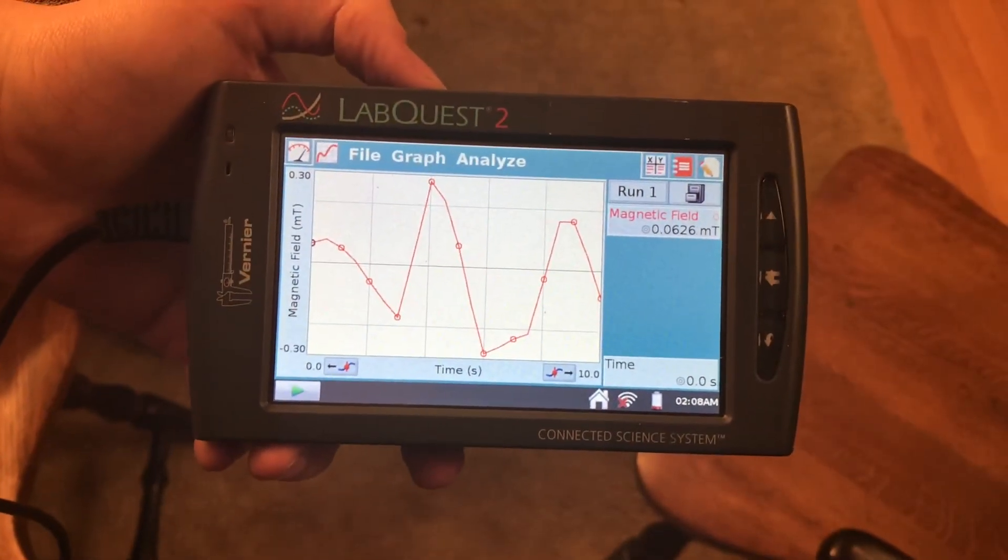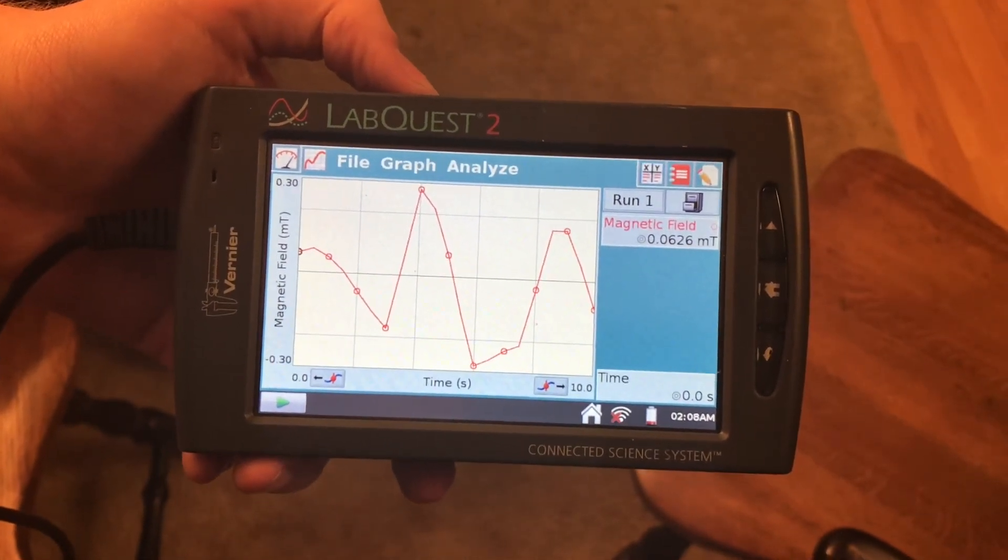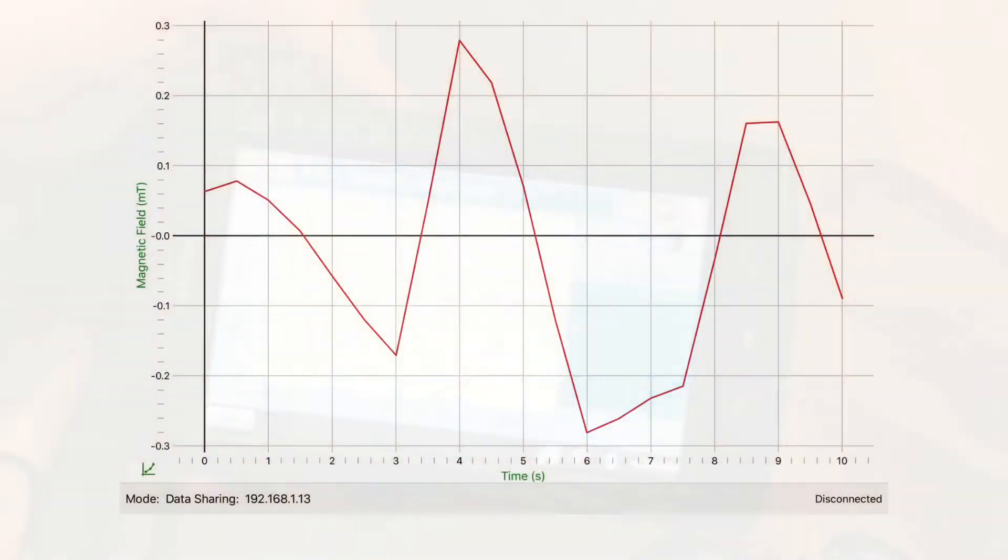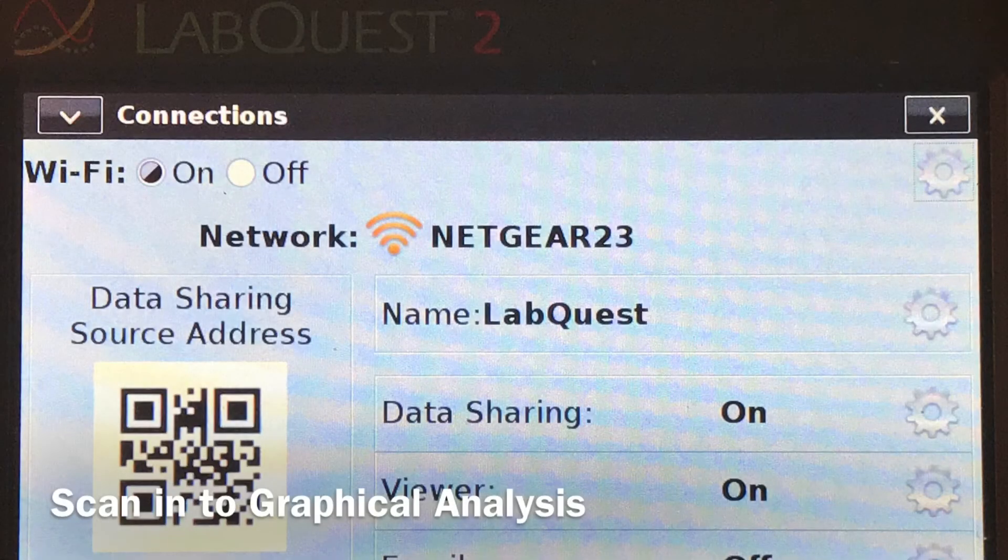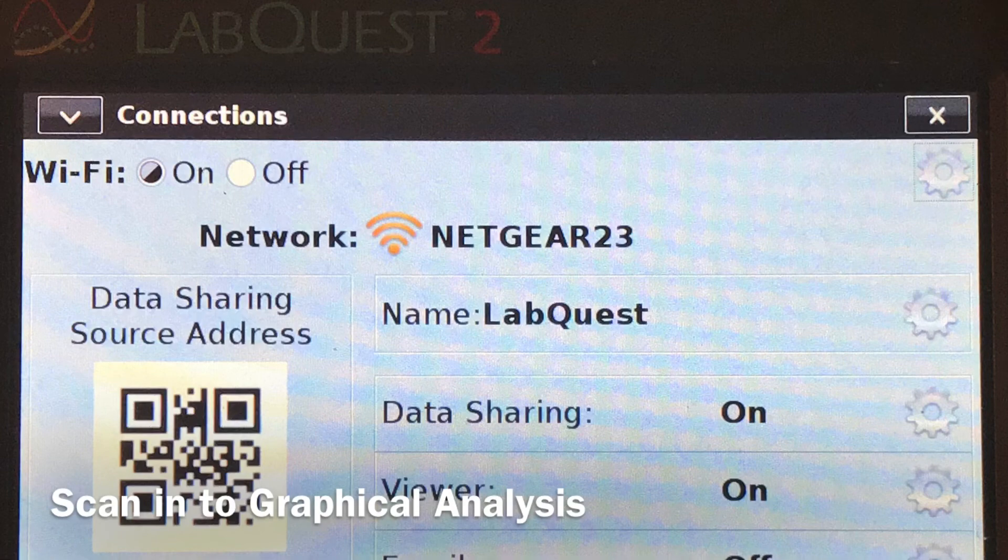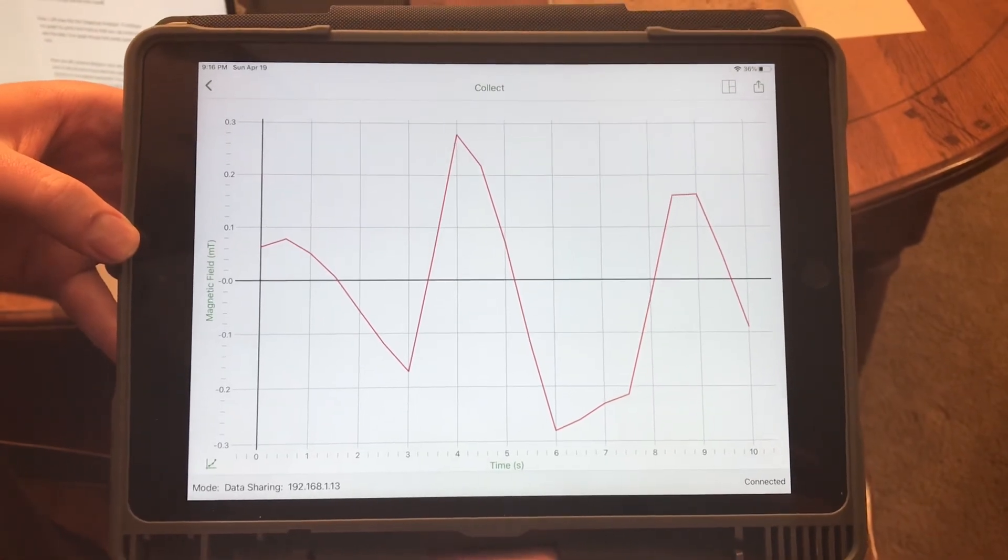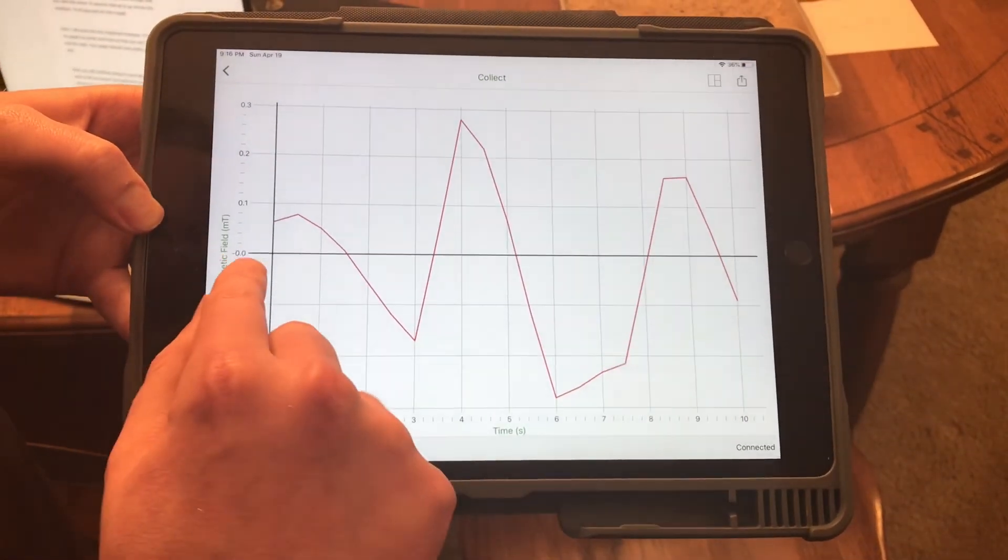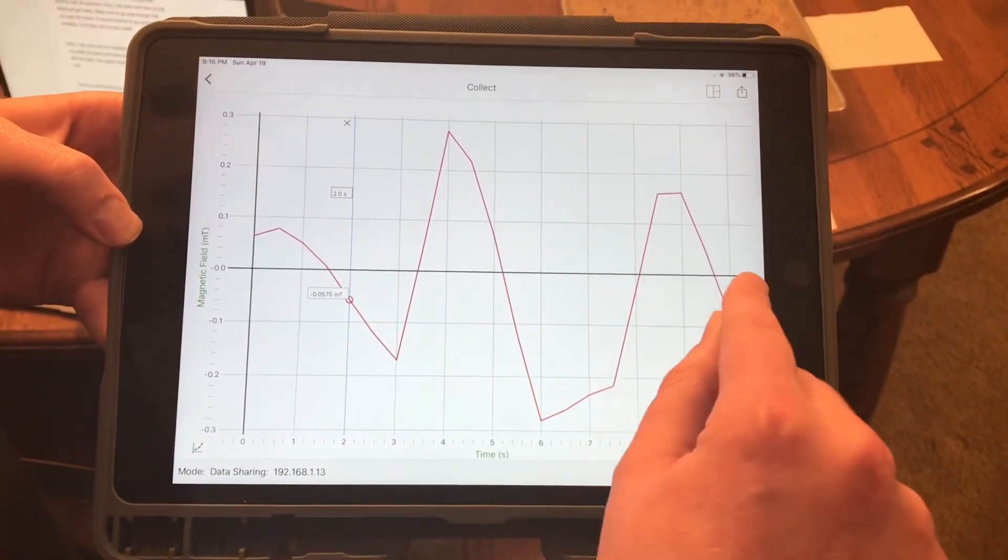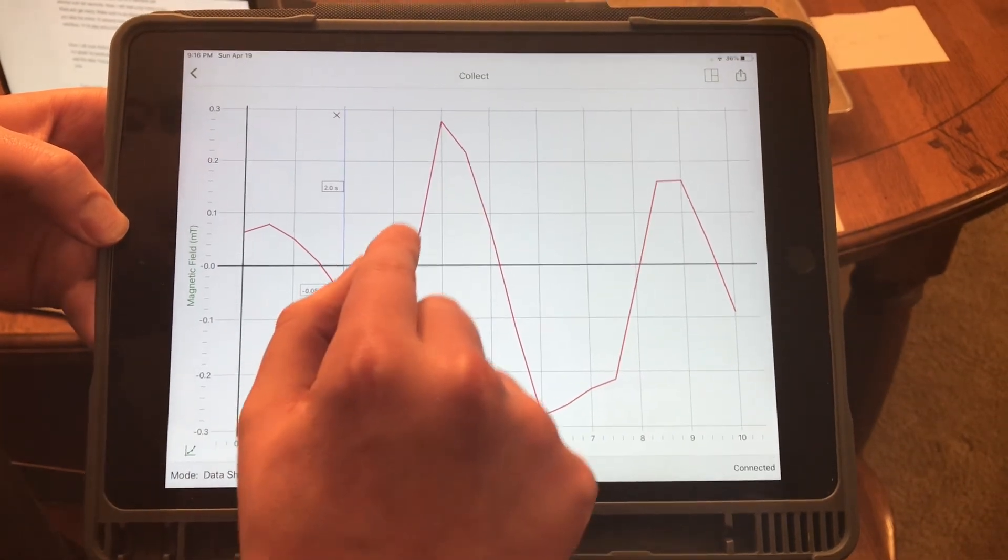So this is how my data turned out when it was all said and done. So what I'm going to do next is I'm going to plug this into graphical analysis. So I've got this scanned into graphical analysis now. So your data won't look perfectly like this, but it should look pretty similar. Make sure that you have a zero line here and that you definitely have points of data that are below zero and points of data that are above zero.